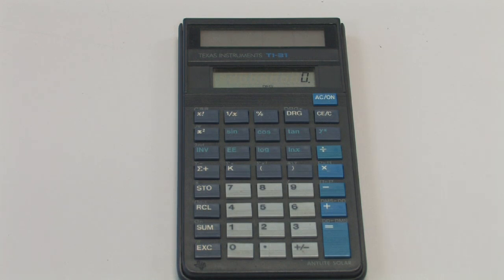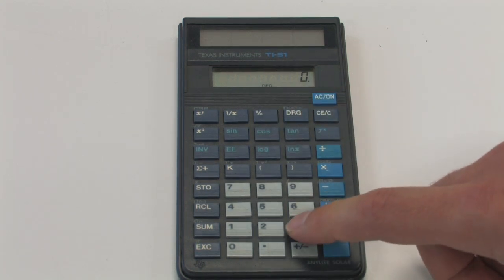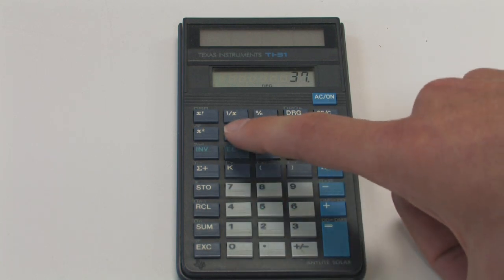So for instance, if I wanted to calculate the sine of 37 degrees, I would first make sure that my calculator is in degree mode, type in 37, and then hit the sine button.